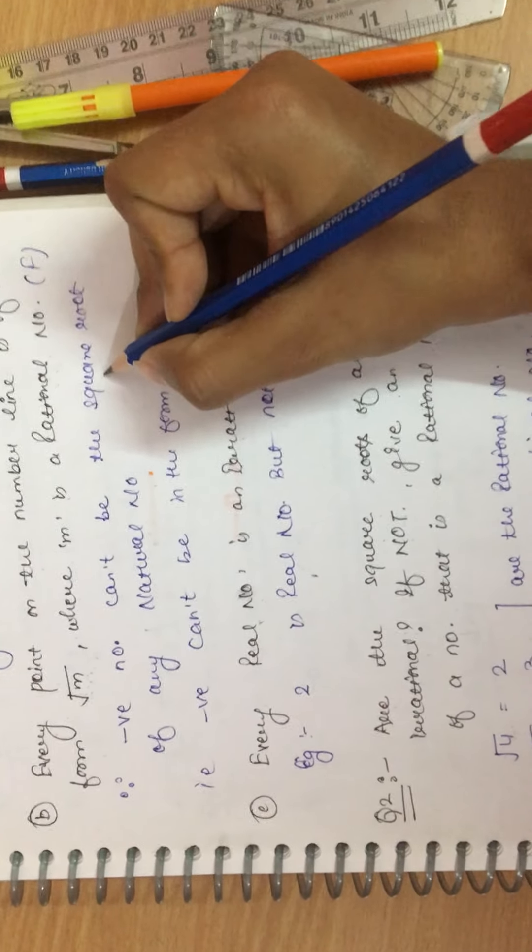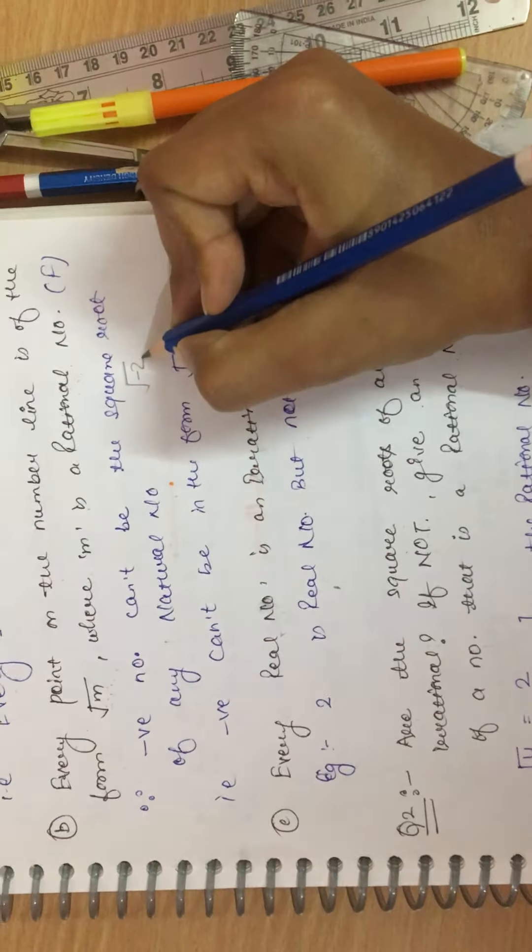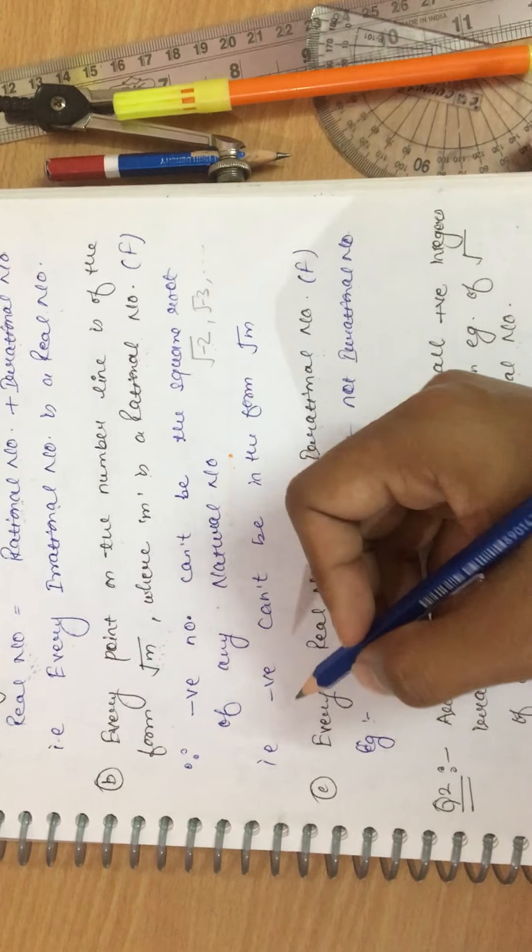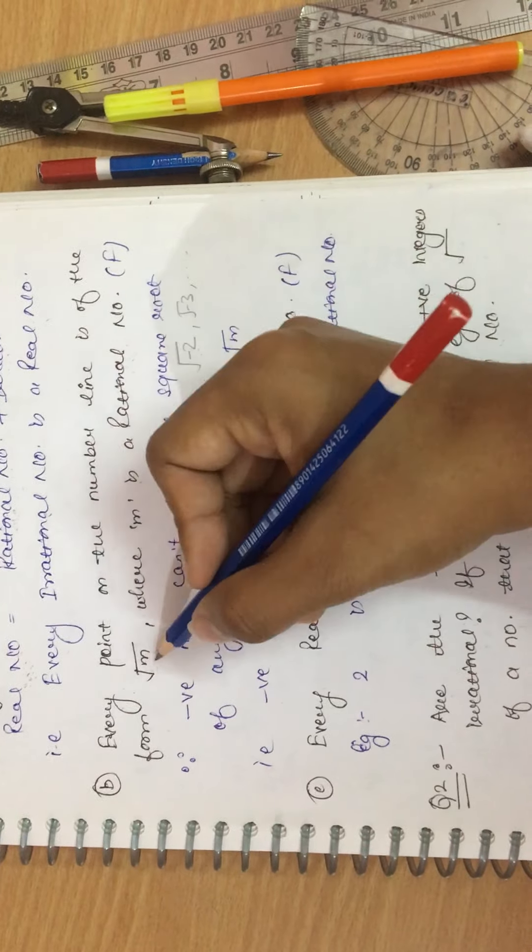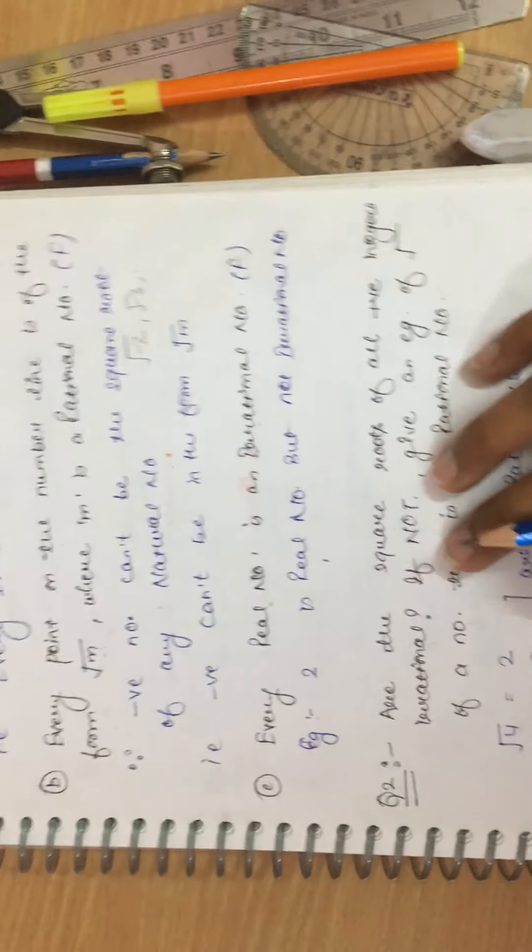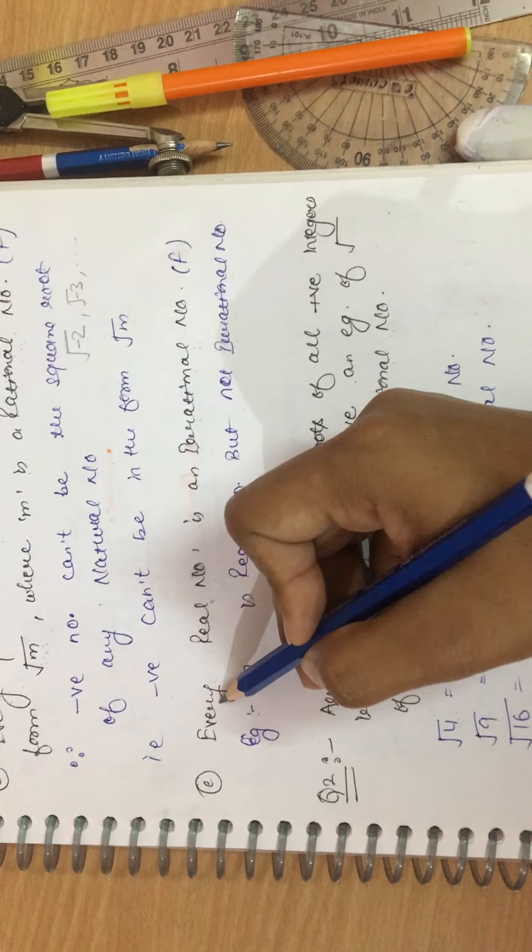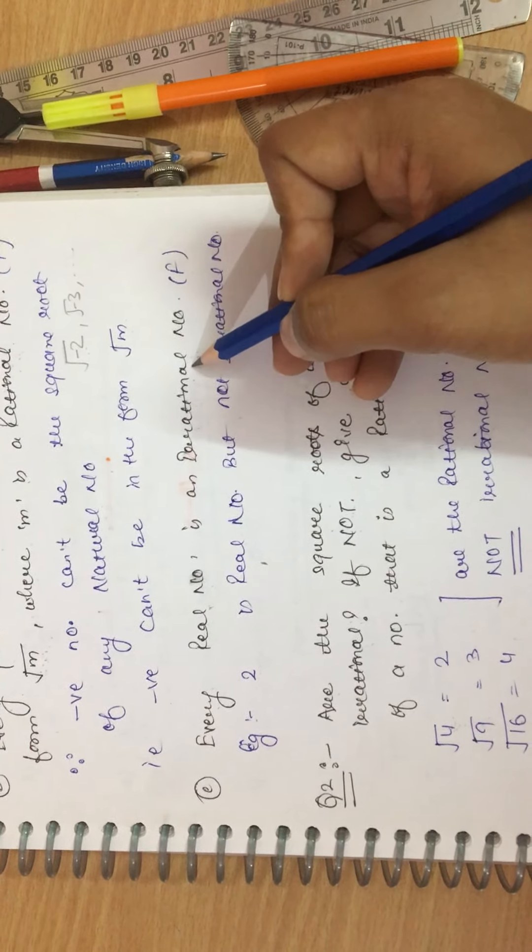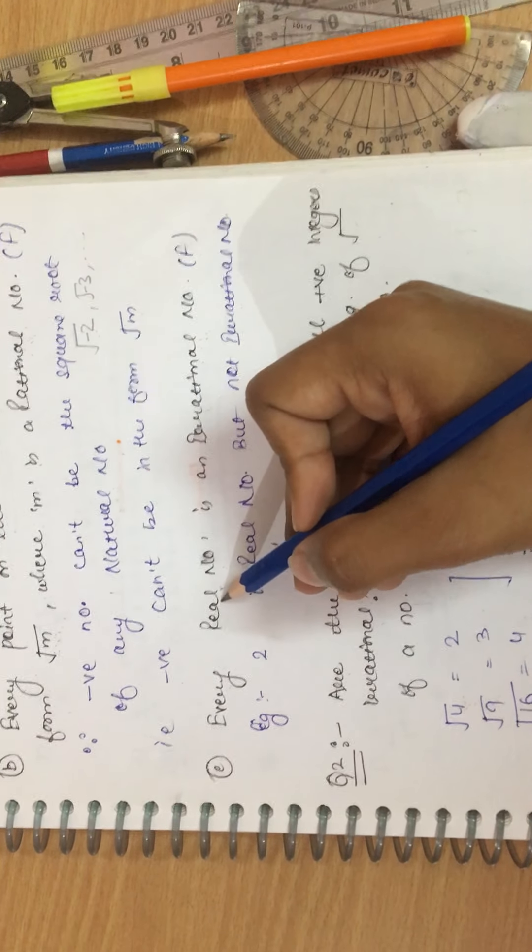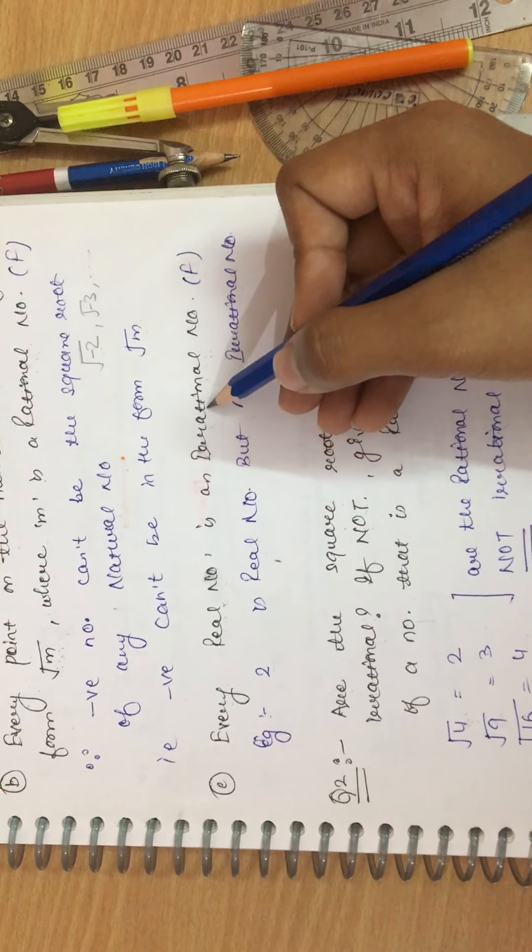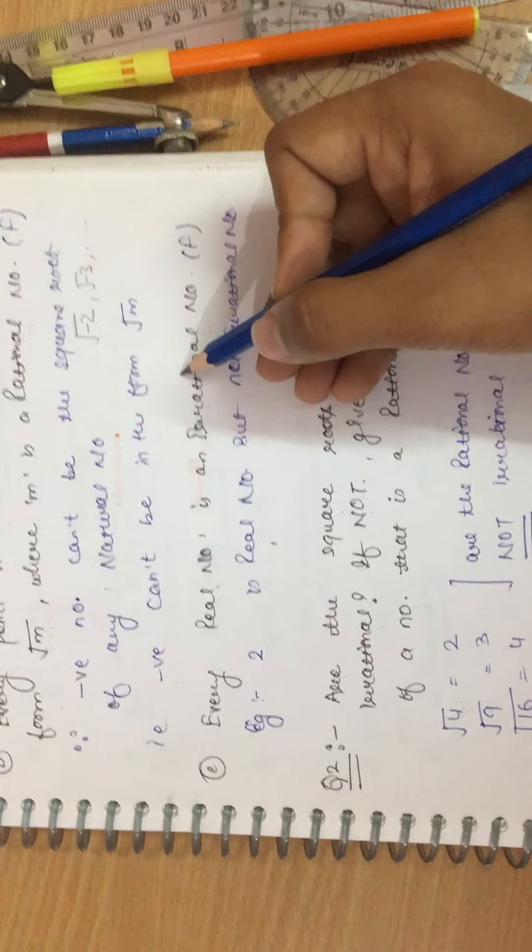Second statement says that every point on the number line is of the form under root M where M is the rational number. This statement is false because negative numbers cannot be the square root of any natural number. Example, minus 2, minus 3 and so on. Their square root cannot be a natural number. So negative numbers cannot be in the form of under root M on the number line.